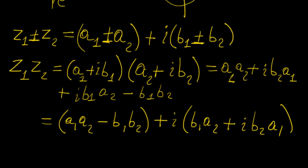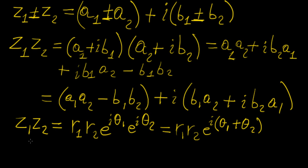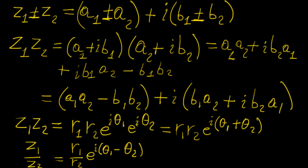If we want to express multiplication in polar form, we have r1 e to the i theta1 times r2 e to the i theta2. Since powers of the same base add, this becomes r1 r2 e to the power of i(theta1 plus theta2). Similarly for division, z1 over z2 in polar form is simply r1 over r2 times e to the power of i(theta1 minus theta2), since dividing powers of the same base means subtracting the exponents.